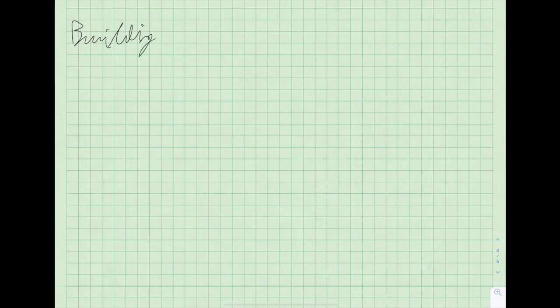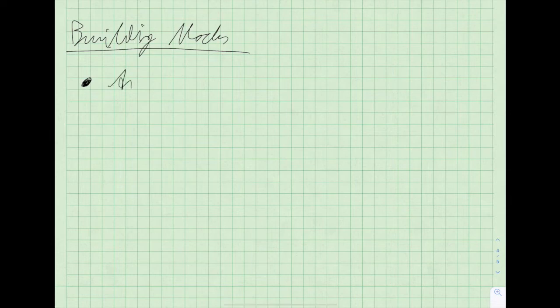There are two group-theoretic constructions that form the backbone of Bass-Serre theory — the basic building blocks. The first one is so-called amalgamated free products.